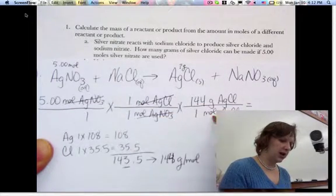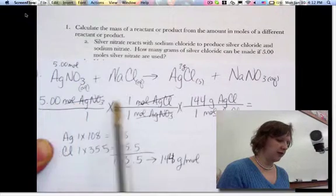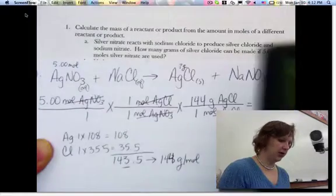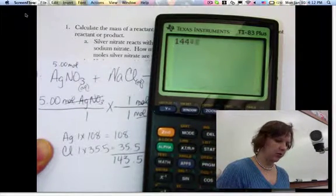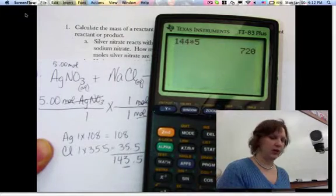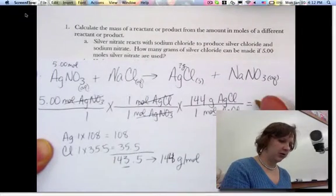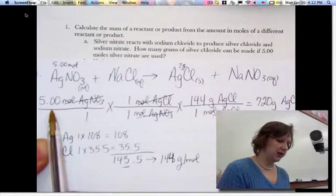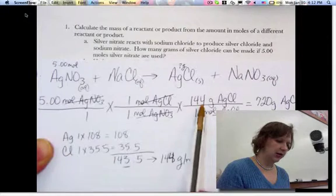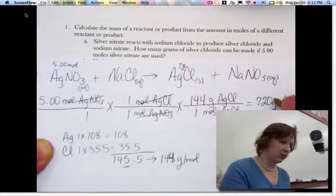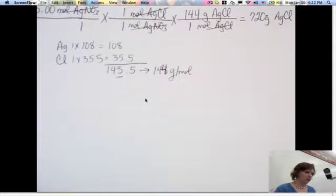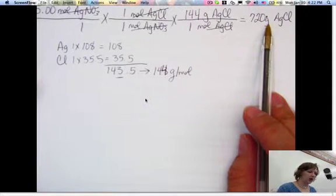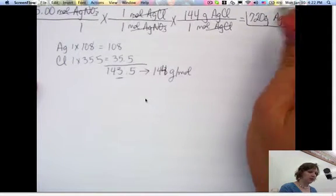Now moles of silver chloride cancel out. And the only math I really have is five times 144. All ones on the bottom, so there's no point dividing. So five times 144 is 720. So 720 grams of silver chloride. Now remember, we wanted that to be three sig figs, because this is three, and this is three. So to get three out of that, I'm going to have to put the little decimal. When we put the decimal in there, that makes it three significant figures, and our final answer is 720 grams of silver chloride.